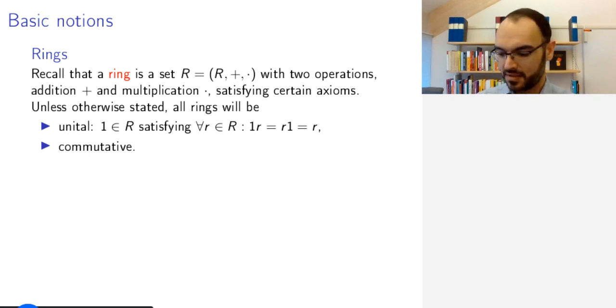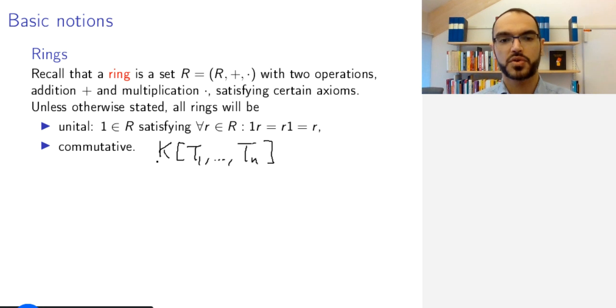So the main rings that we will have in mind will be polynomial rings in several variables over some field k, together with their subrings and quotient rings and all that, and these are all commutative.